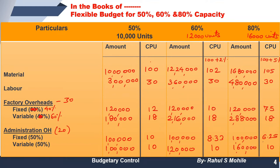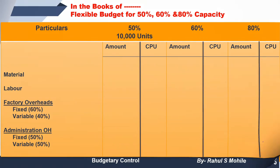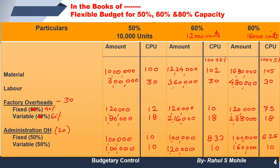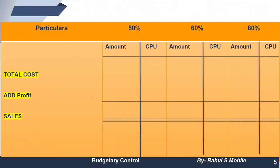The key concept to remember: fixed expenses stay constant in amount across all capacities, and variable expenses remain the same per unit — if per unit stays same, multiply by units to get different totals. Now we will calculate the total. The amounts in the column — 10 lakhs, 3 lakhs, 1.2 lakhs, 1 lakh, and 20 — give a total cost of 18 lakhs at 50% capacity for 10,000 units. Dividing 18 lakhs by 10,000 gives CPU of 180.